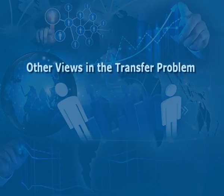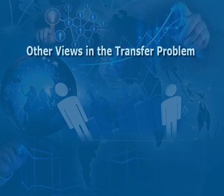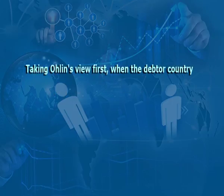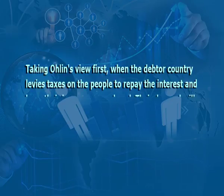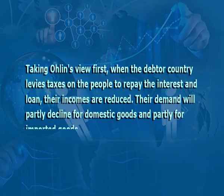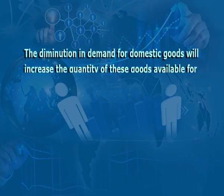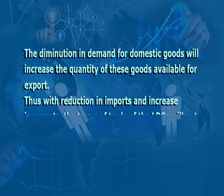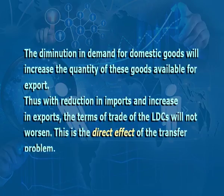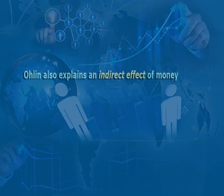Now let us look at the Ohlin view in detail for the present transfer problem of less developed countries. Taking Ohlin's view: when the debtor country levies taxes on the people to repay interest and loan, their incomes are reduced; their demand will partly decline for domestic goods and partly for imported goods. The diminution in demand for domestic goods will increase the quantity of these goods available for export. Thus with reduction in imports and increase in exports, the terms of trade of the less developed countries will not worsen. This is the direct effect of the transfer problem.